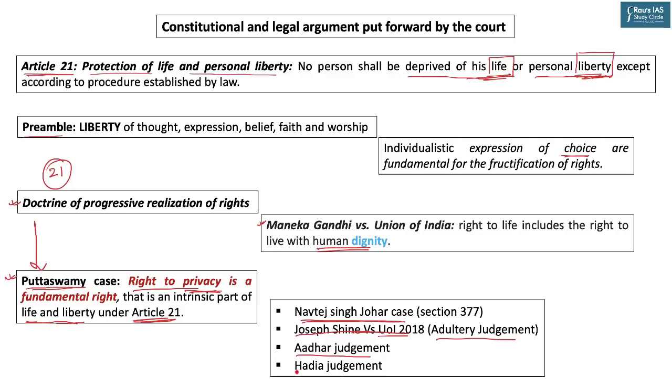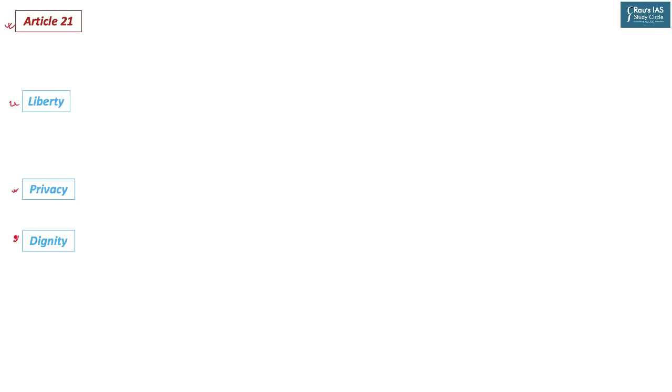In the Hadiya judgment, related to inter-religion marriage, the right to choose your life partner — a private issue — was declared a fundamental right under Article 21. In conclusion, Article 21 entails three important rights: the right to liberty, the right to privacy, and the right to dignity. These three parameters form a template that can be used to analyze intermarriages or any other related issue.